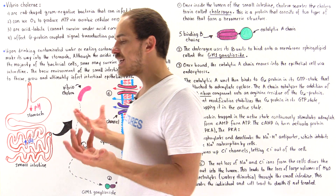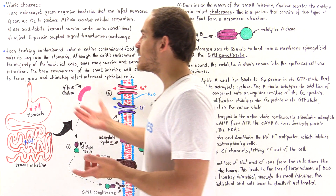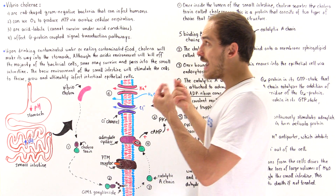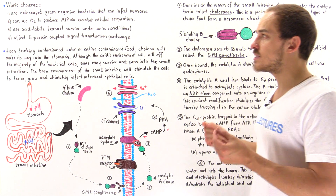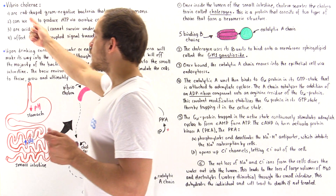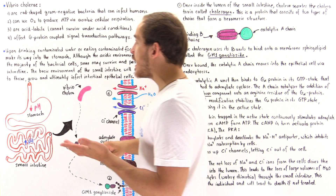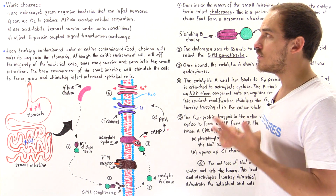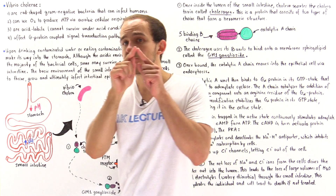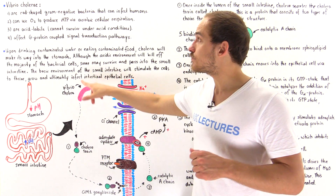What exactly is this bacterial pathogenic agent? We call it Vibrio cholerae, which is the agent that causes cholera in humans. Vibrio simply means it's a rod-shaped, gram-negative bacterial cell. In fact, the rod shape is actually curved, so it looks like a comma.